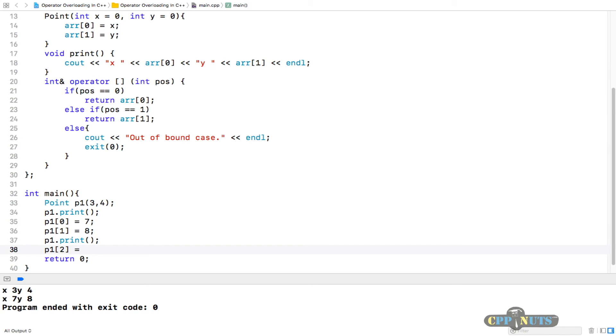Let's see what it will do. We will compile it. See, it executed the first one, second one, and now it is telling that out of bound case and we will exit from that program. If you are doing anything further after this, like printing p1, that won't work.